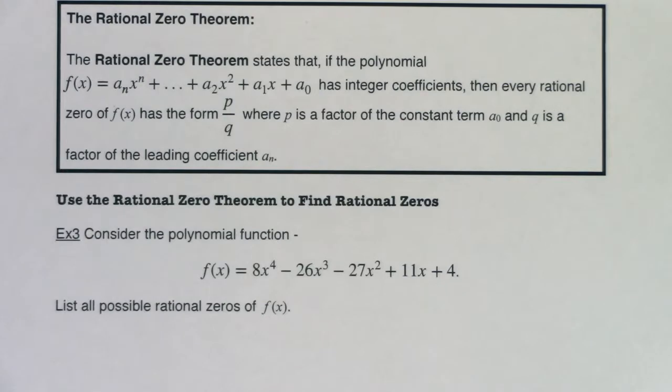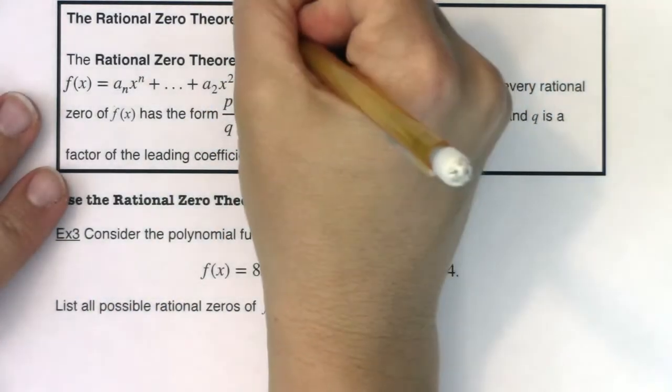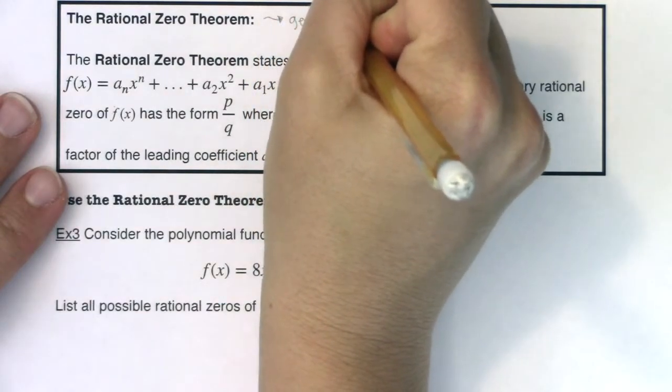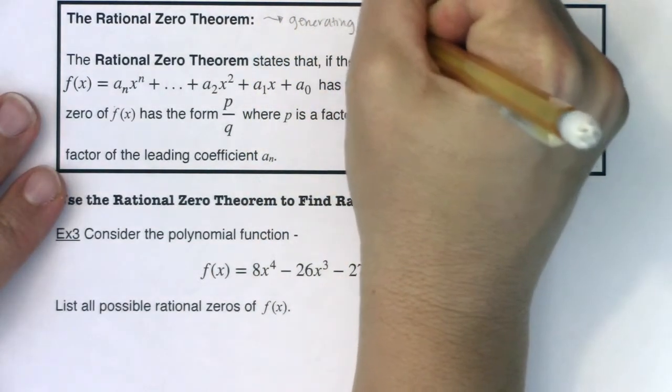Hey Math 31, welcome back. We're at example three and before we tackle example three, let's look at the rational zero theorem. And what this is doing is generating